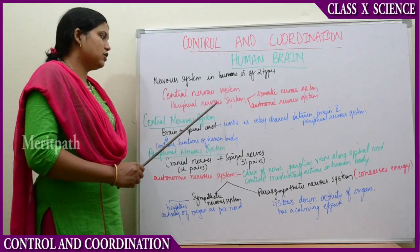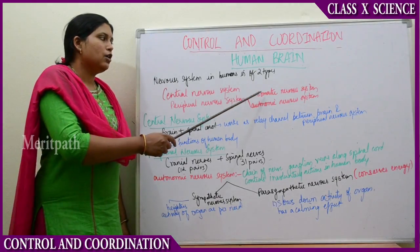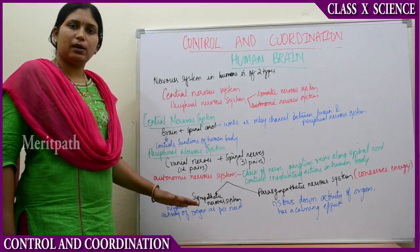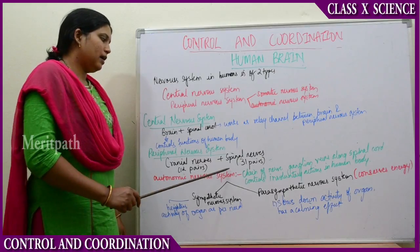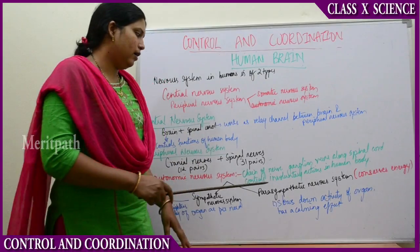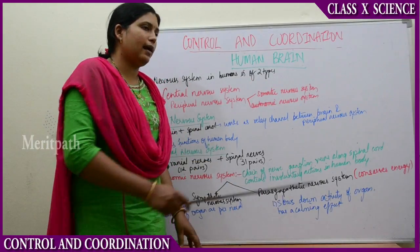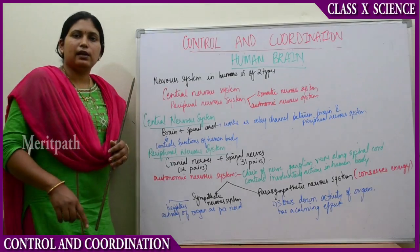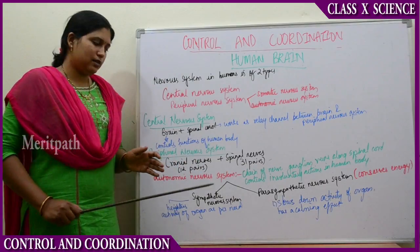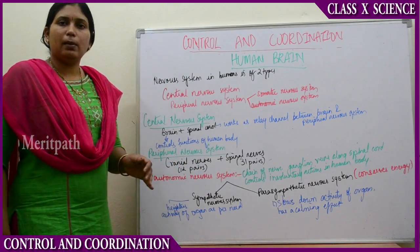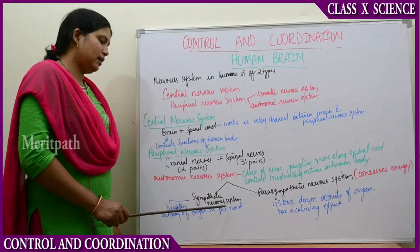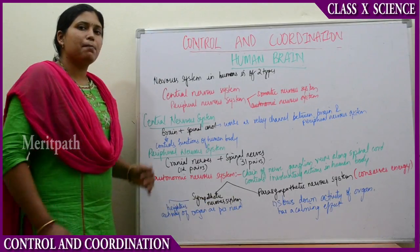Next, moving on to the autonomic nervous system. The peripheral nervous system has the somatic nervous system and the autonomic nervous system. The autonomic nervous system has a chain of nerve ganglia which runs along the spinal cord and controls the involuntary actions of human beings. This autonomic nervous system is again divided into two types: the sympathetic nervous system and the parasympathetic nervous system.